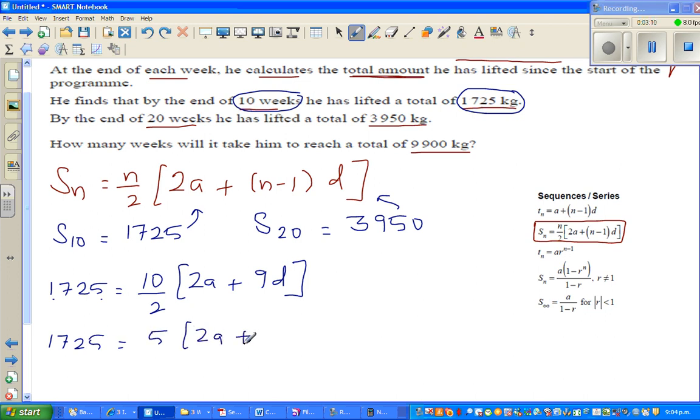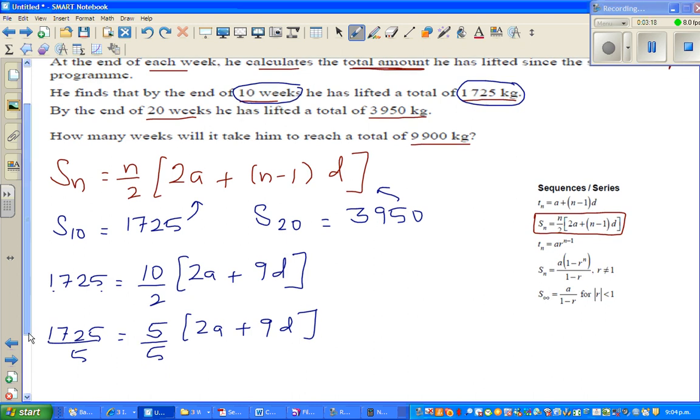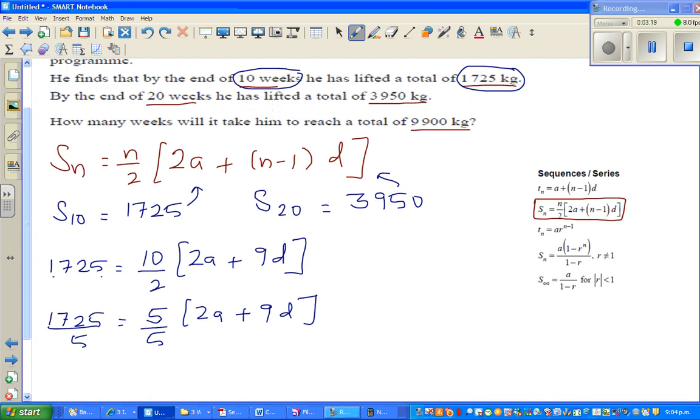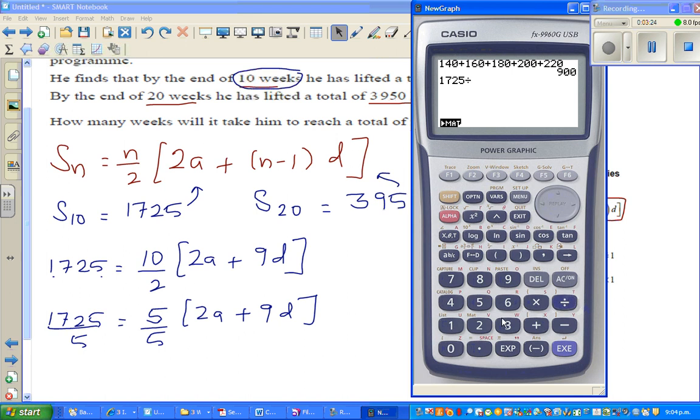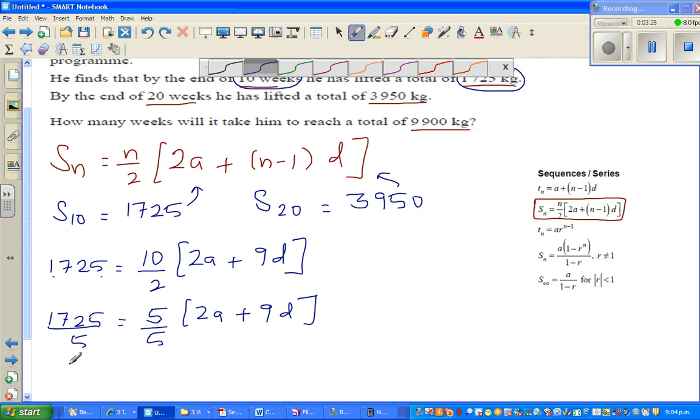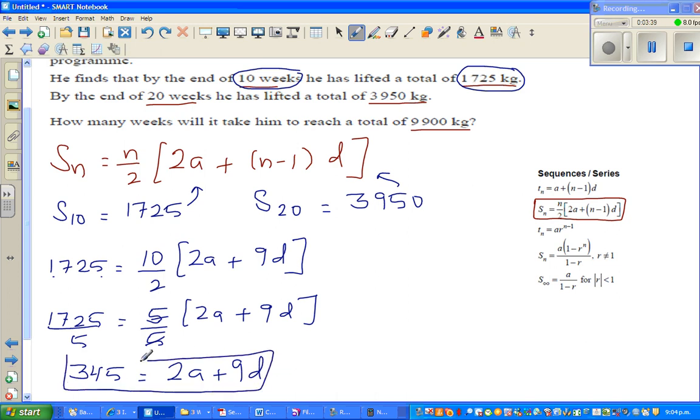This 2 goes into 10 five times, so the next step looks like 1725 equals 5 times (2a plus 9d). I want to get rid of this 5, so if I divide both sides by 5, using a calculator, 1725 divided by 5 is 345. So 345 equals 2a plus 9d. This is equation 1.